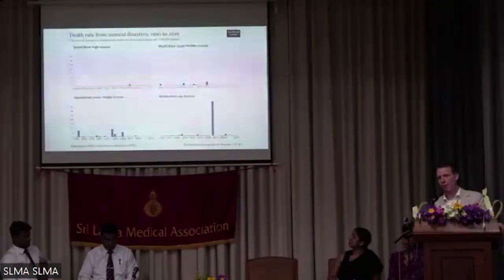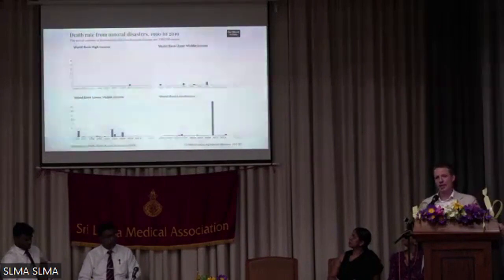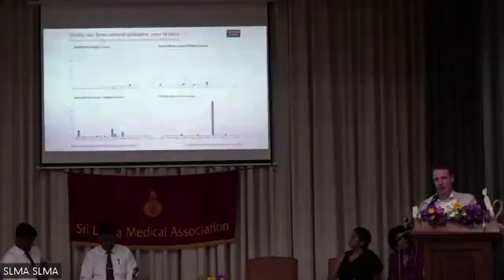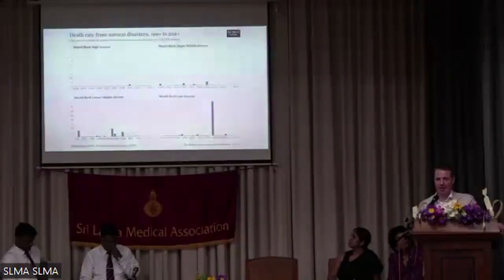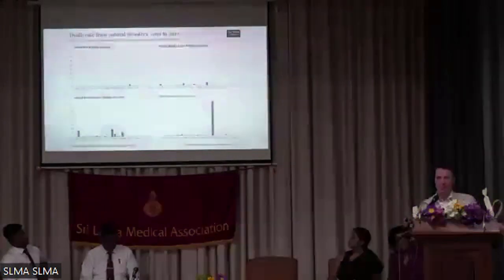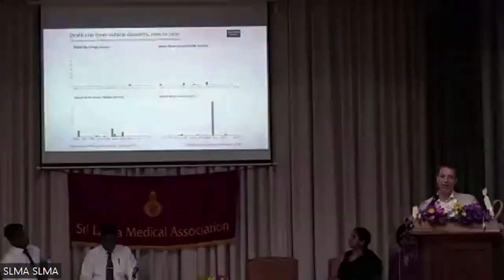When you look at the data in more detail, you can also see that it's lower-middle-income countries and low-income countries that are most badly impacted in terms of death rates from these types of hazards. High-income countries have far greater capacity to deal with those risks and to reduce the human losses from them.